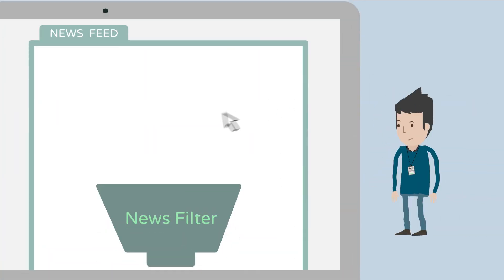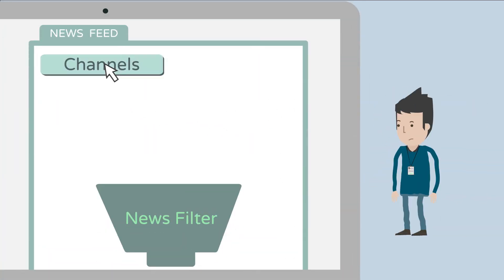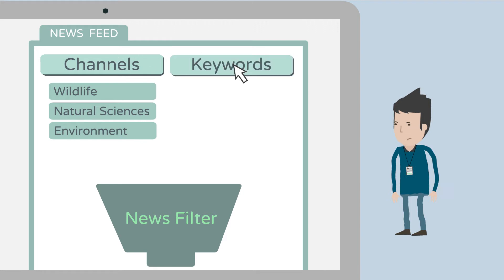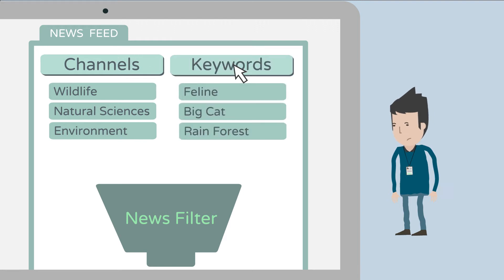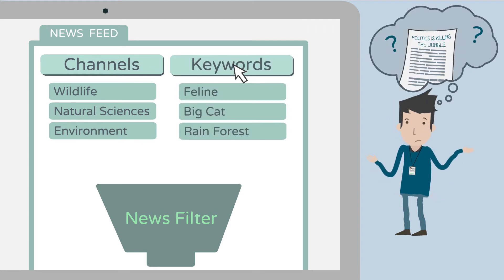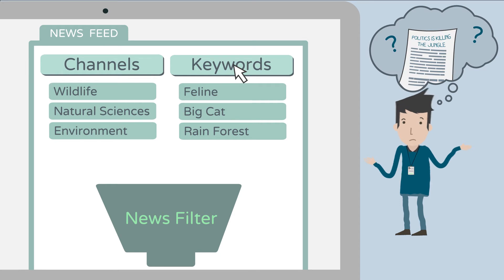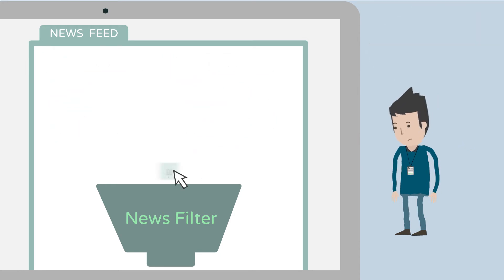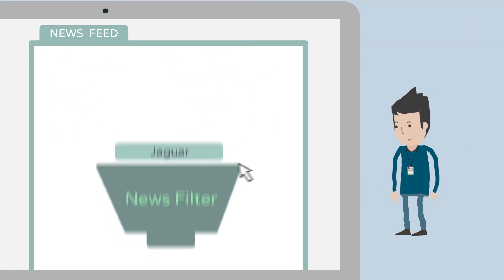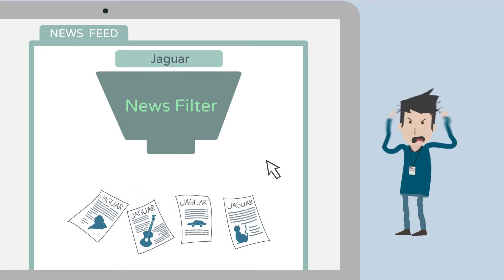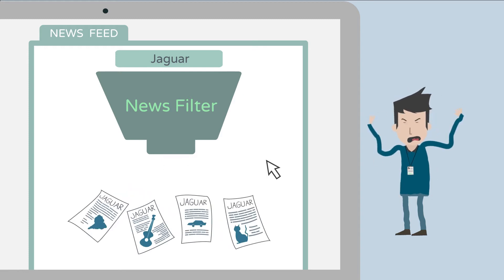But no matter how carefully he selects news channels of interest and how precisely he defines the keywords in his news filter, he still misses relevant articles from other domains. And when he chooses a generic keyword like jaguar, he also gets articles on luxury cars and electric guitars.